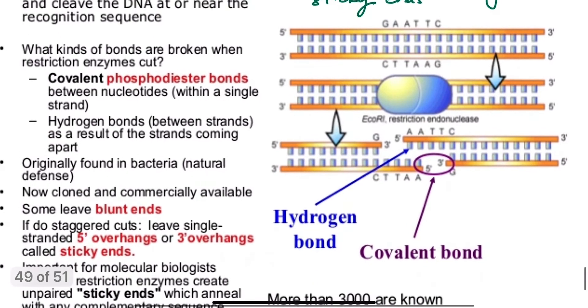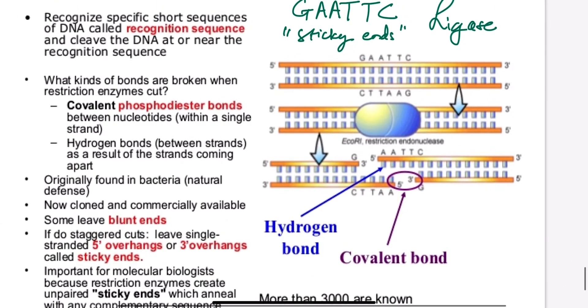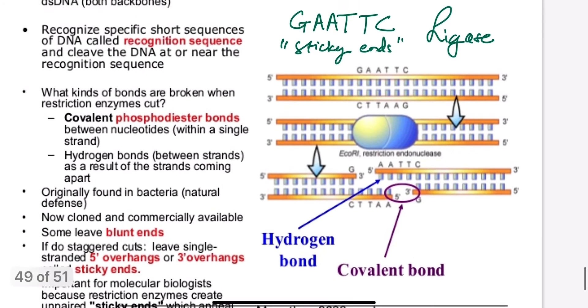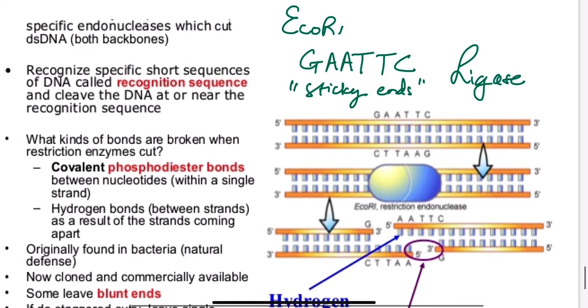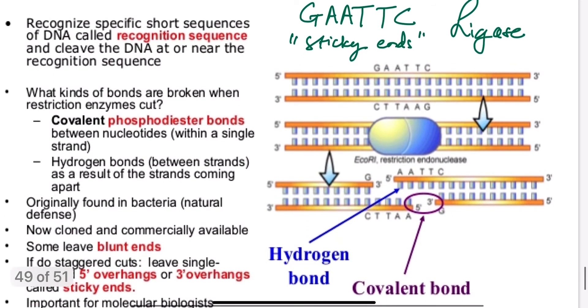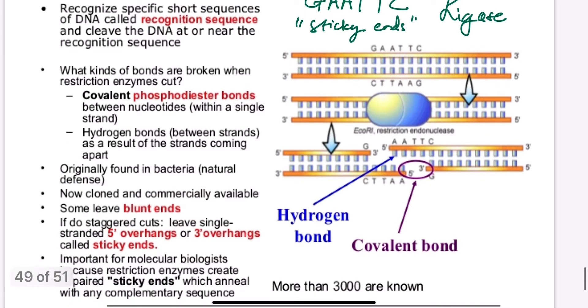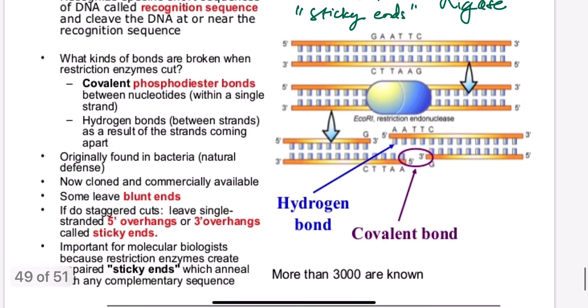Some of these restriction enzymes do leave blunt ends and others do staggered cuts. In other words, they can do a single-stranded cut with a 5' overhang or a 3' overhang. And this is what happens in the case of EcoR1. It creates those sticky ends. So this would be a sticky end over here and then this would be a sticky end over here. And you can join these ends up by having that ligase enzyme available to glue them back together.